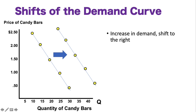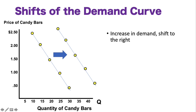Here is the demand curve. On the horizontal or X-axis, we have the quantity of candy bars, and on the vertical or Y-axis, we have the price of candy bars. So price on the Y, quantity on the X, and then we have our different points. One thing I want to point out is the difference between a shift in demand and a movement along the curve. If the price of a product changes, that's just movement along the curve — it's already written for you.